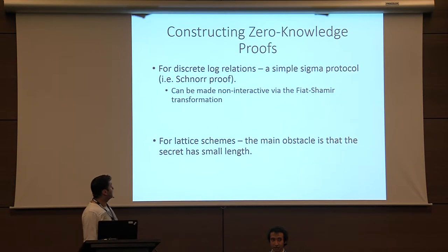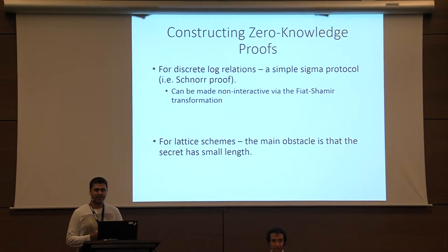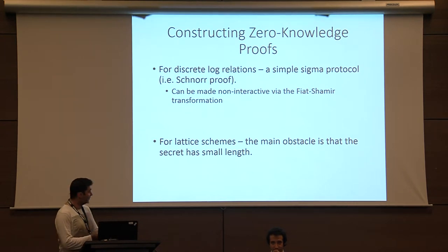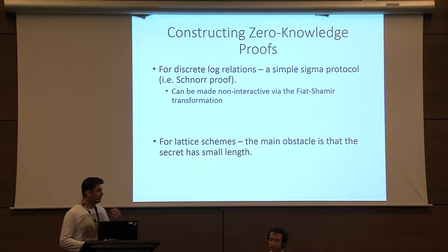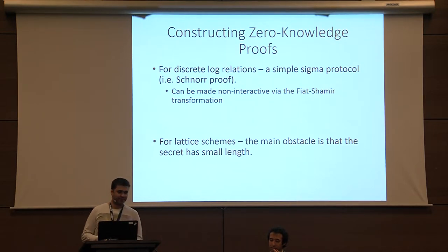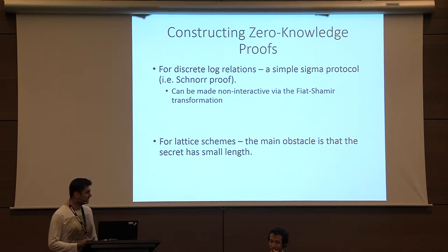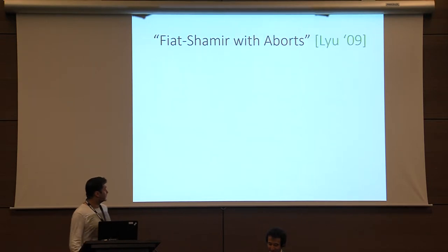Constructing zero-knowledge proofs: for discrete log relations, we know how to do this — it's just the Schnorr protocol, a simple sigma protocol that can be made non-interactive via the Fiat-Shamir transformation. For lattice schemes, unfortunately things become a lot more complicated. The main obstacle is that we don't just have to prove this algebraic relation f(s) equals t — we really have to prove that the secret we know has small length, and this causes all the problems we have with zero-knowledge proofs for lattices.